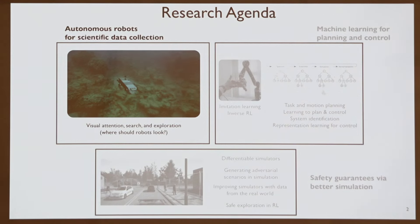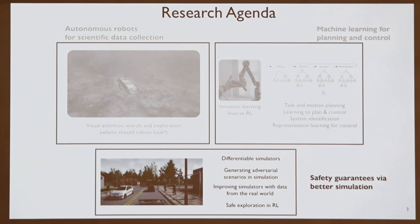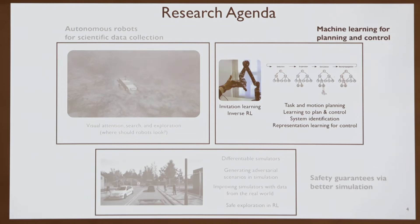The research agenda in my lab has three main directions. One is autonomous robots for scientific data collection—classic field robotics where you send robots into the wild and want them to come back with useful data for scientists, covering visual attention, visual search, and exploration. I'm also working on providing safety guarantees through better simulation, including generating adversarial scenarios in simulation that have a high probability of being adversarial in the real world.